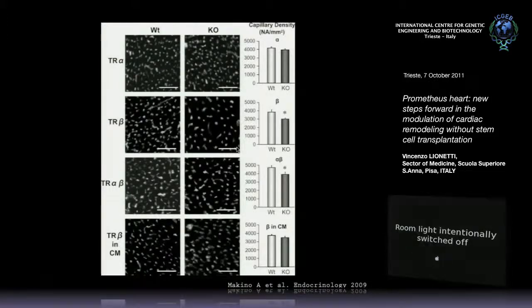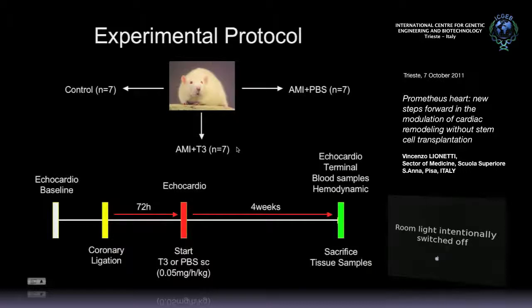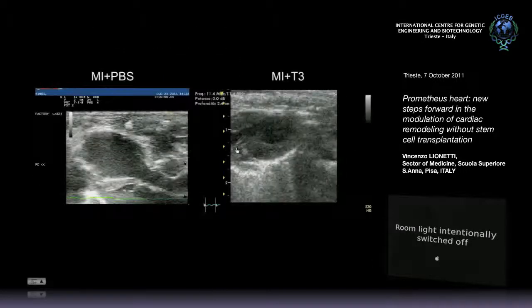We tried to administer thyroid hormone at very low, physiological concentration — only to replace the physiological level that should naturally be in the blood — using a long-term infusion with an osmotic pump under the skin. We selected the time under clinical guidance: after 72 hours of myocardial infarction, when thyroid hormone levels are at their lowest, we started the infusion with triiodothyronine or PBS. After four weeks, we investigated the results echocardiographically, histologically, and by molecular biology.